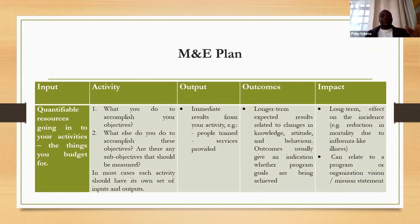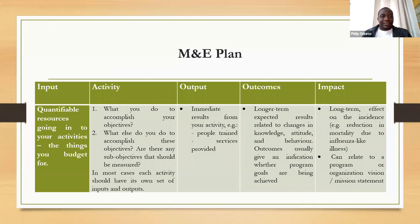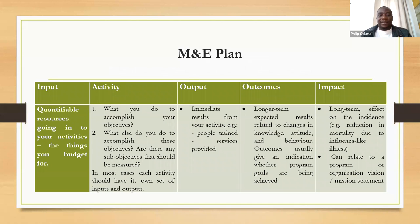This is the M&E plan in terms of input, activity, output, and impact. Input is quantifiable resources going into your activities — the things you budget for: human, equipment, and financial. Activity — the inputs are used to conduct activities. What do you do to accomplish your objectives? Technical activities are things you do to direct output that will help you achieve the objectives and goals of the project. The output is the immediate results from your activity — people trained, services provided. Outcomes are longer-term expected results related to changes in knowledge, attitude, and behavior, and outcomes usually give an indication whether the program goals are being achieved.